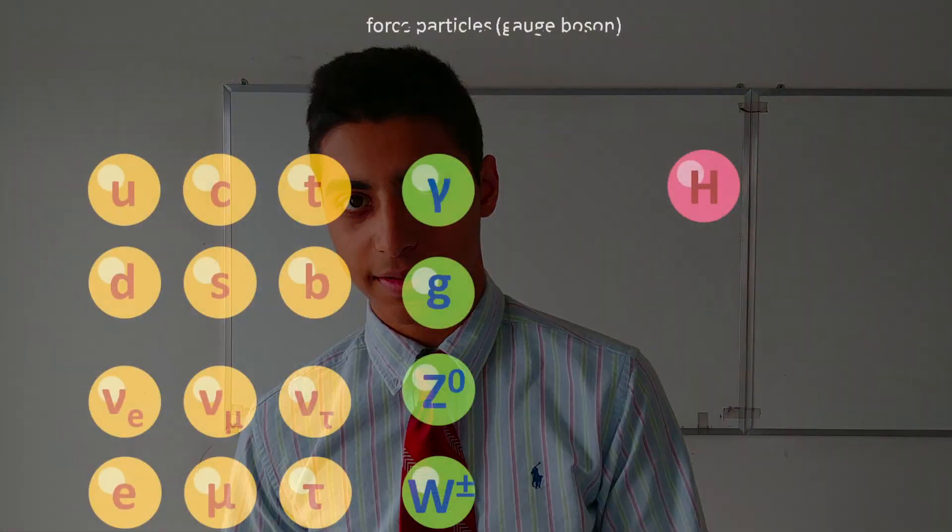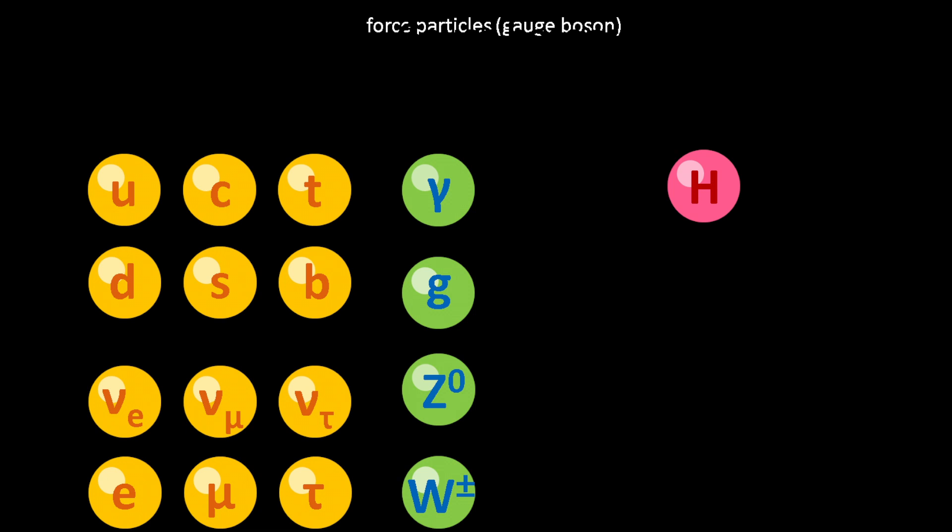The first question is: what is the standard model? What does it represent? The standard model of particle physics represents fundamental particles, which basically means the smallest unit of matter. Originally, when people thought the atom couldn't be split, the atom was a fundamental particle. Then when the atom was split, protons, neutrons, and electrons were fundamental particles.